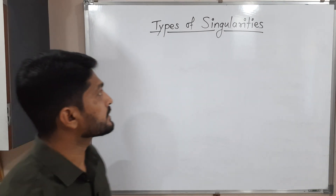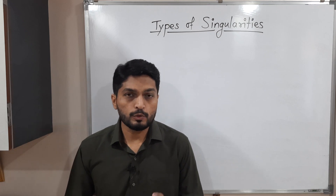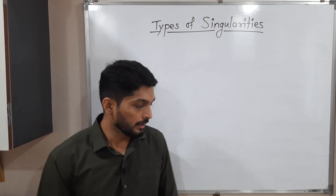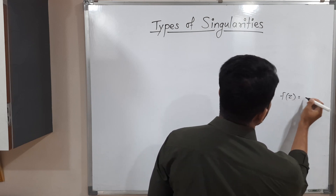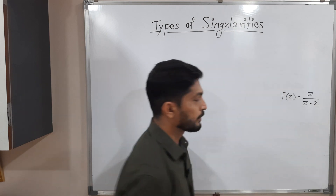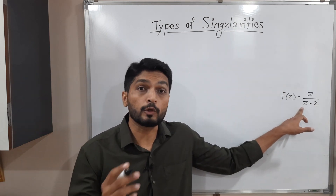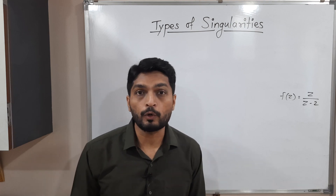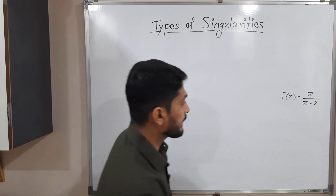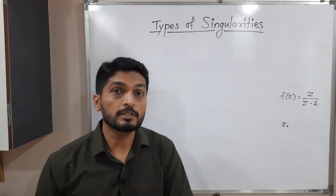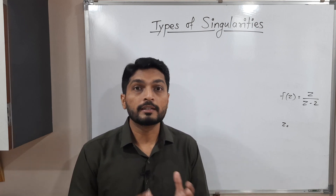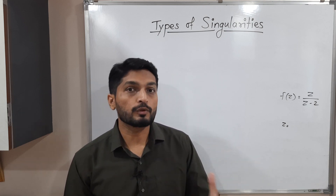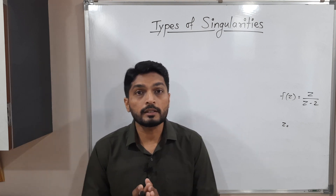Hi everyone. In this video we are going to discuss types of singularities. We will recall the definition from our previous video and then go for its types. Suppose we have any function f(z) = z/(z-2). If we put z = 2, the denominator will be 0, meaning the function is not analytic at z = 2, so we say it is a singular point or singularity. Let us now discuss the types of singularities.